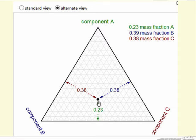then we're 23% of the way towards pure component A, or the mass fraction of A is 0.23. Likewise, for the other two components, so this shows how we can read a point on this triangle representing the three components,